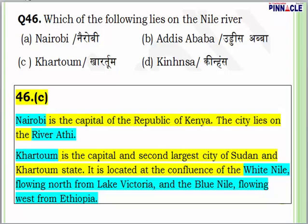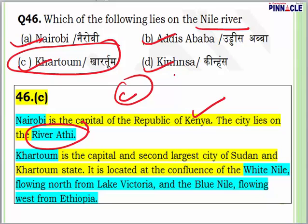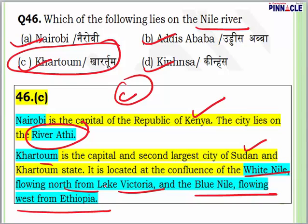Question 46: Which of the following lies on the Nile River? Options are Nairobi, Khartoum, Addis Ababa or Kinshasa. Nairobi is the capital of Kenya and lies on River Athi. Khartoum is the capital and second largest city of Sudan, located on the confluence of the White Nile flowing north from Lake Victoria and the Blue Nile flowing west from Ethiopia. Answer is C — Khartoum.